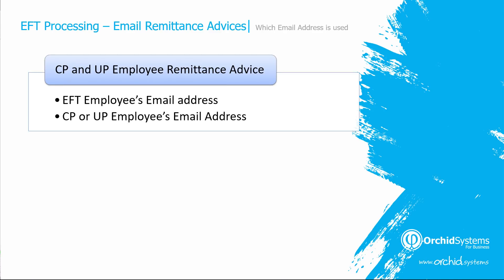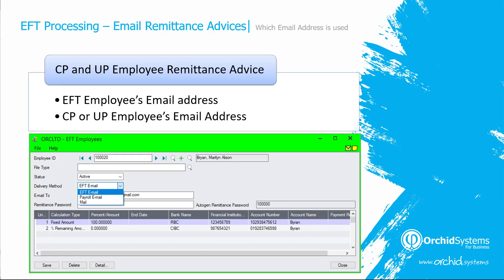In payroll — Canadian payroll or US payroll — it looks on the EFT employee's record for the EFT employee's email address, or you can configure it to use the CP or UP employee's email address. Or you could specify mail, in which case the remittance advice would be printed.